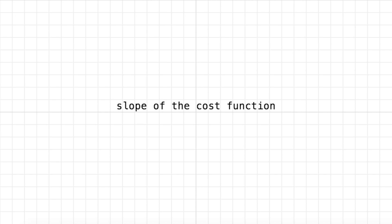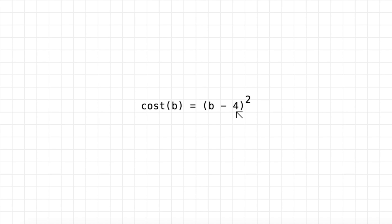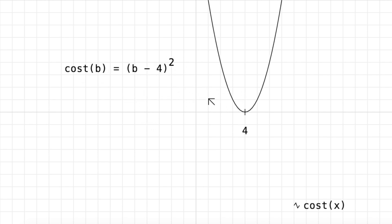Hello everyone. In this video we're going to look at finding the slope of our cost function. In the last video we used this cost function. We had a super simple neural network with no inputs and one parameter b, so its prediction is always going to be whatever the value of b is. We take the difference of that and a random target value — we picked 4 in the last video — and we square that difference. So this is our squared error cost function. If we graph it, you can see it's a parabola centered on 4, so when b is equal to 4, the cost is equal to 0.